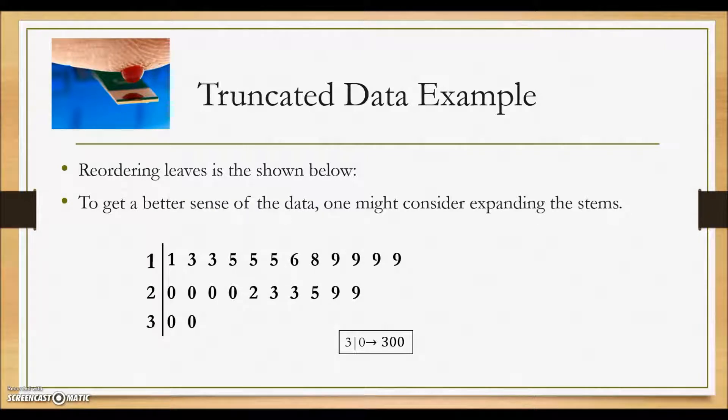Here we have reordered the leaves for this blood sugar stem plot that was created. And to get a better sense of the data, one might consider expanding the stems, putting perhaps two ones so that we have 100 to 149, a second one for the 150 to the 199, and so on, so that we could get a better sense of where most of the values are running.